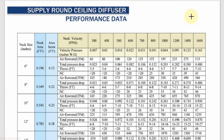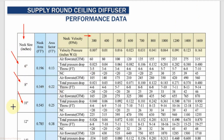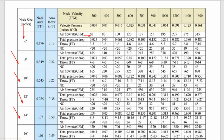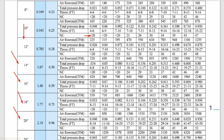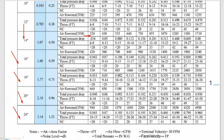To select the round ceiling diffuser, we use the performance data sheet provided by the manufacturer. In this sheet, the first column shows the neck size of the diffuser in inches, and the top row shows the neck velocity in FPM. The neck sizes available are 6 inch, 8 inch, 10 inch, 12 inch, 14 inch, 16 inch, 18 inch, 20 inch, and 24 inch.